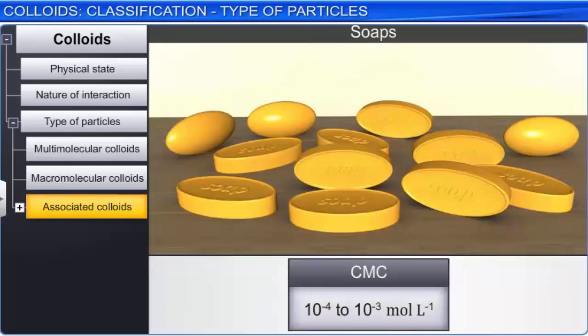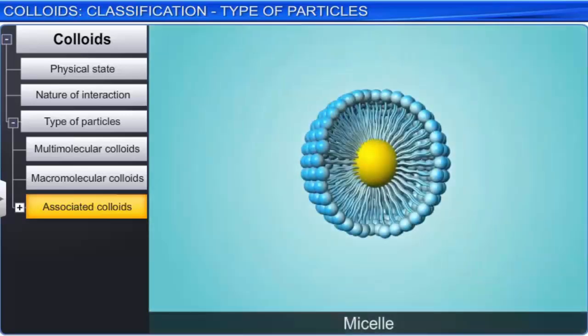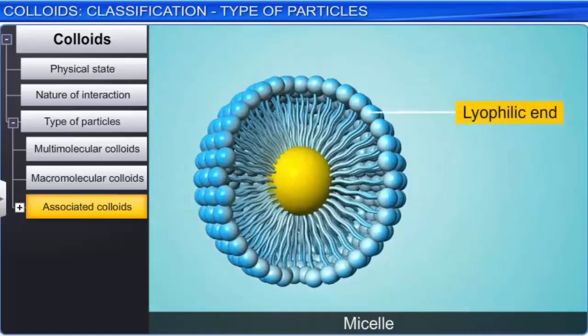The formation of a micelle takes place above a certain concentration called critical micelle concentration or CMC, and above a particular temperature known as Kraft temperature or TK. Every micelle system has a specific value of critical micelle concentration. For soaps, the CMC is 10 to the power minus 4 to 10 to the power minus 3 moles per liter. Each micelle contains at least 100 molecules. Micelles are generally formed by specific types of molecules that have both lyophilic as well as lyophobic ends.